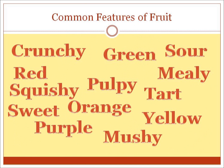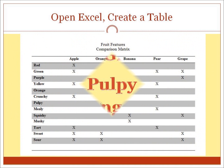The next step is to brainstorm a list of the typical attributes of these fruits. Why don't we start with color? These fruits can be red, green, yellow, purple, or orange. And how about their texture? Some fruits may be crunchy, pulpy, mealy, squishy, or mushy. As for taste, let's try tart, sweet, and sour. We could probably go on and on, but let's focus on the most important features for our matrix so we don't overwhelm ourselves.